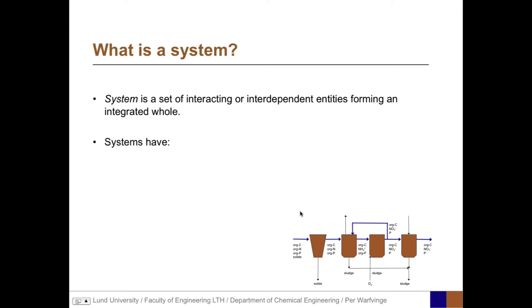Going back to the definition, systems have certain properties. One property is structure, which means the system is defined by parts and their composition. Taking the water treatment plant as an example, we have an alignment of various parts and pipes that connect them. That is one level of structure.